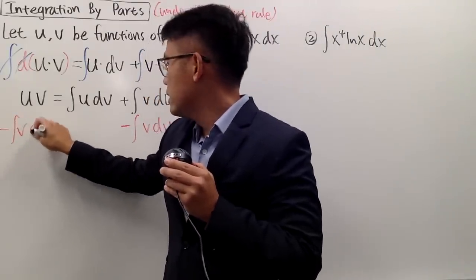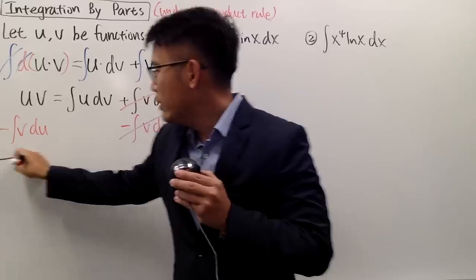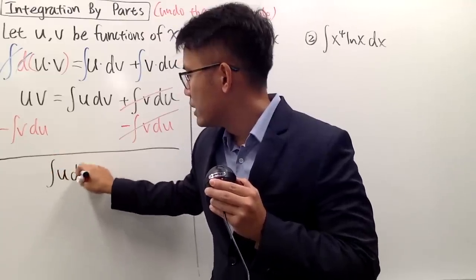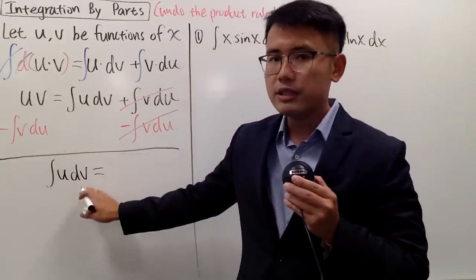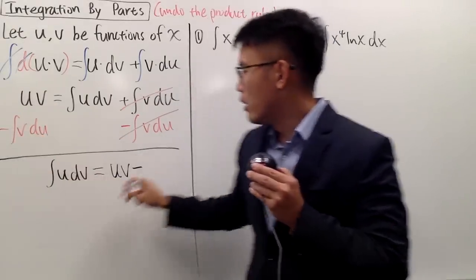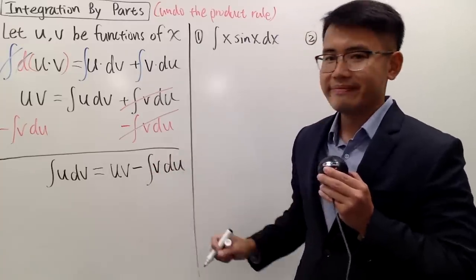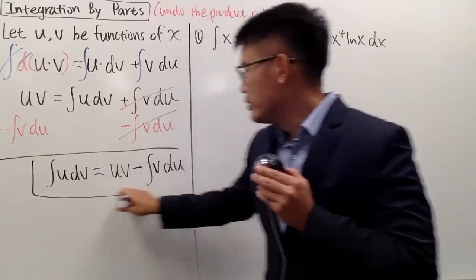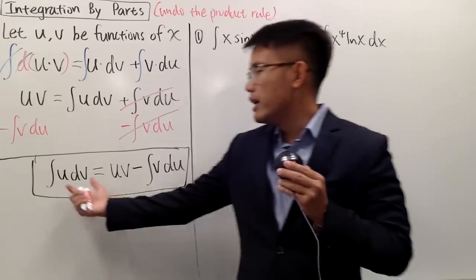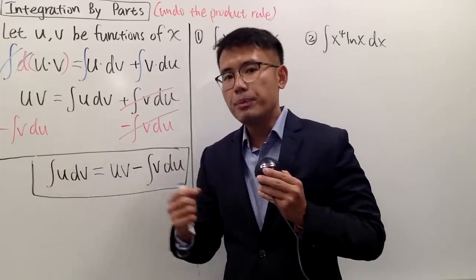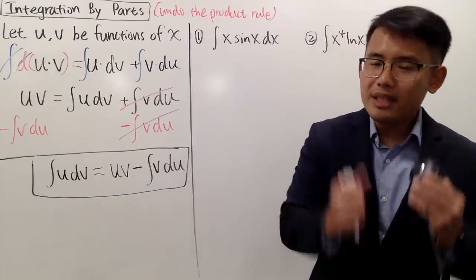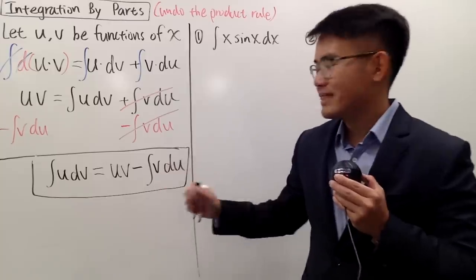When we subtract the integral of v du from both sides, the terms cancel and we end up with the integral of u dv equals uv minus the integral of v du. This is the traditional formula for integration by parts. The idea is: when you look at an integral, try to pick your u and dv, break them apart — one to be differentiated and the other to be integrated — and then construct the right-hand side.